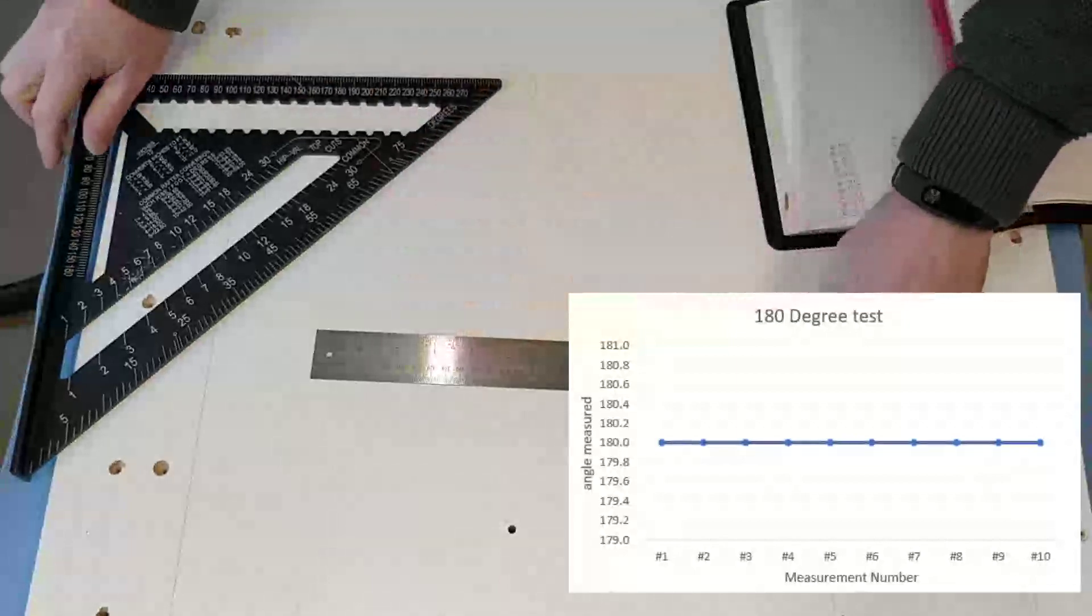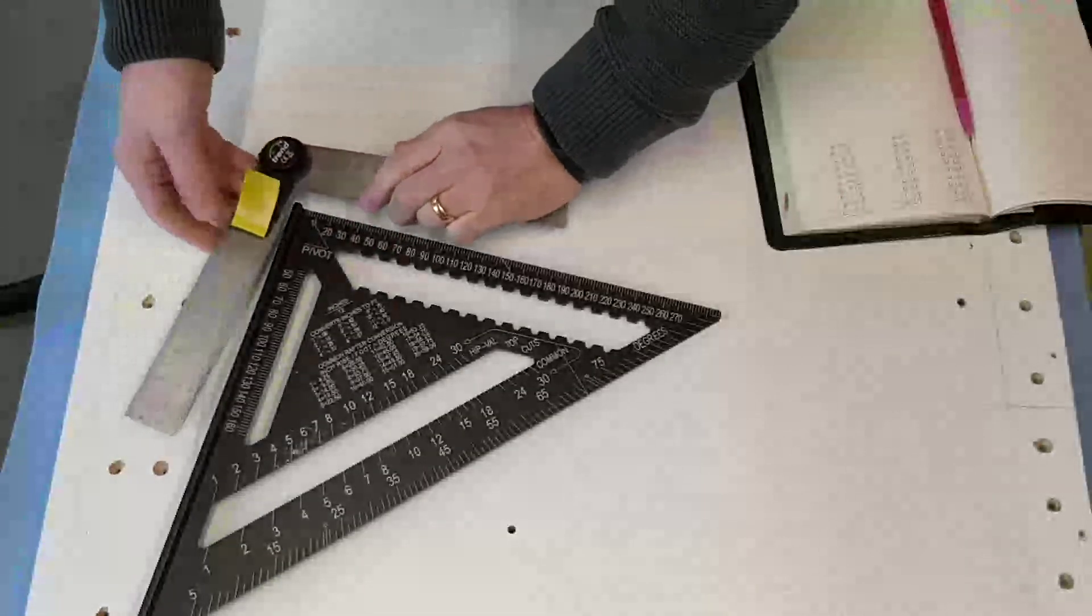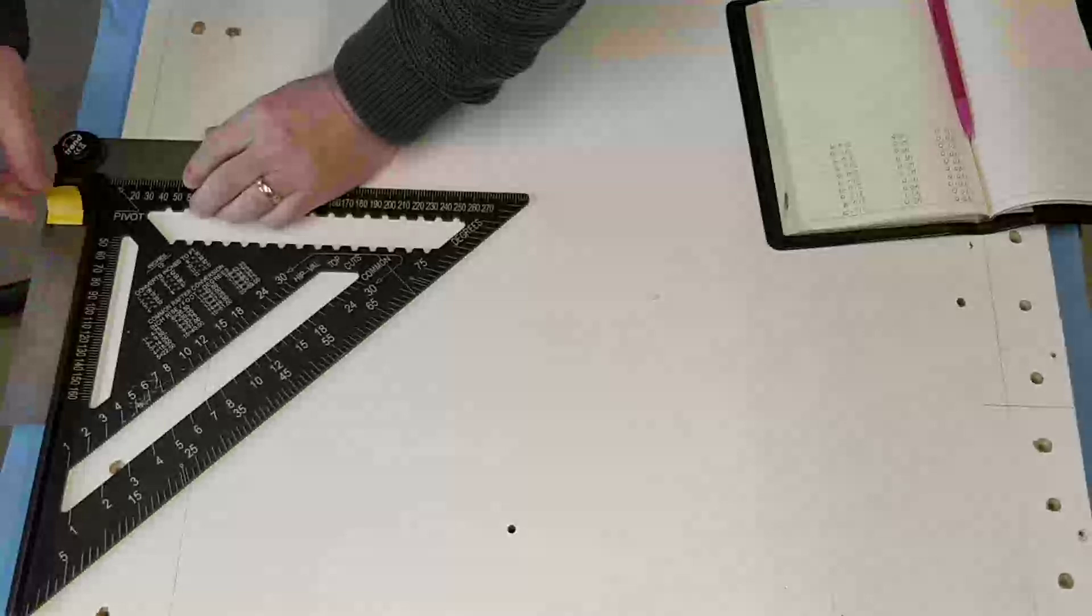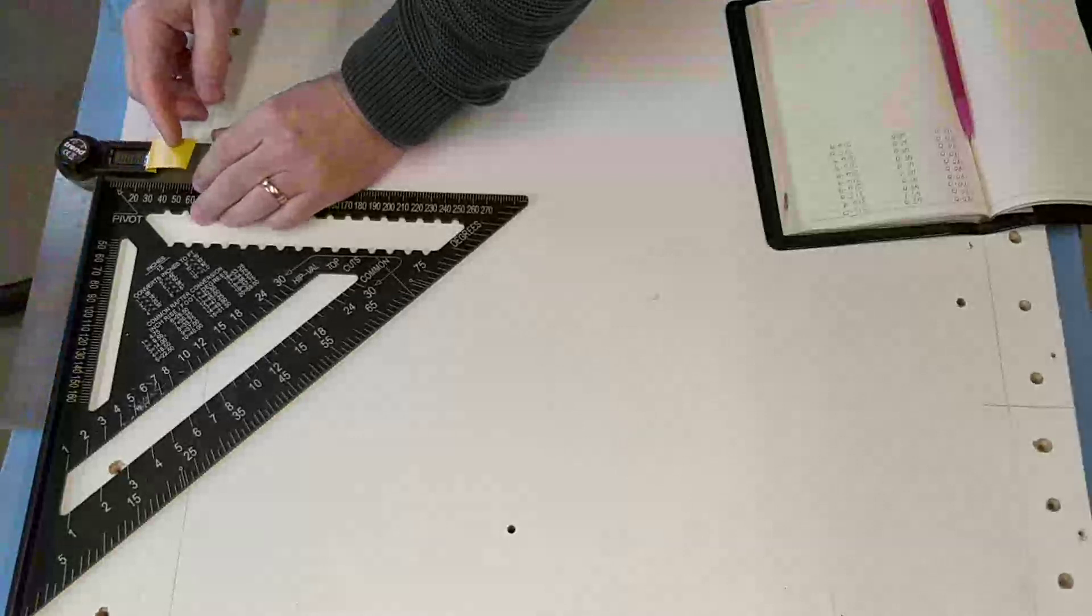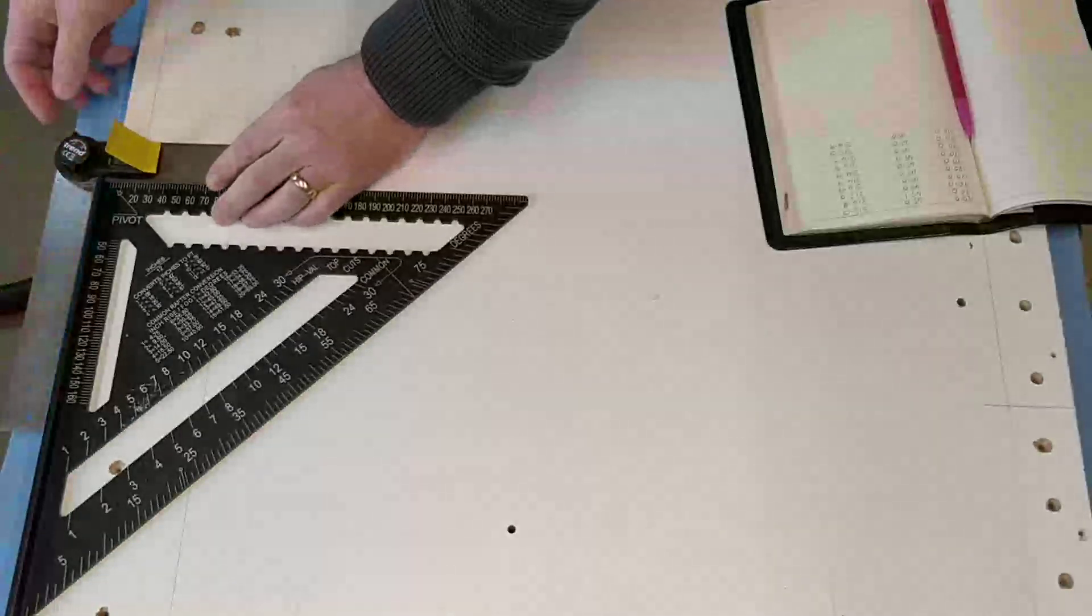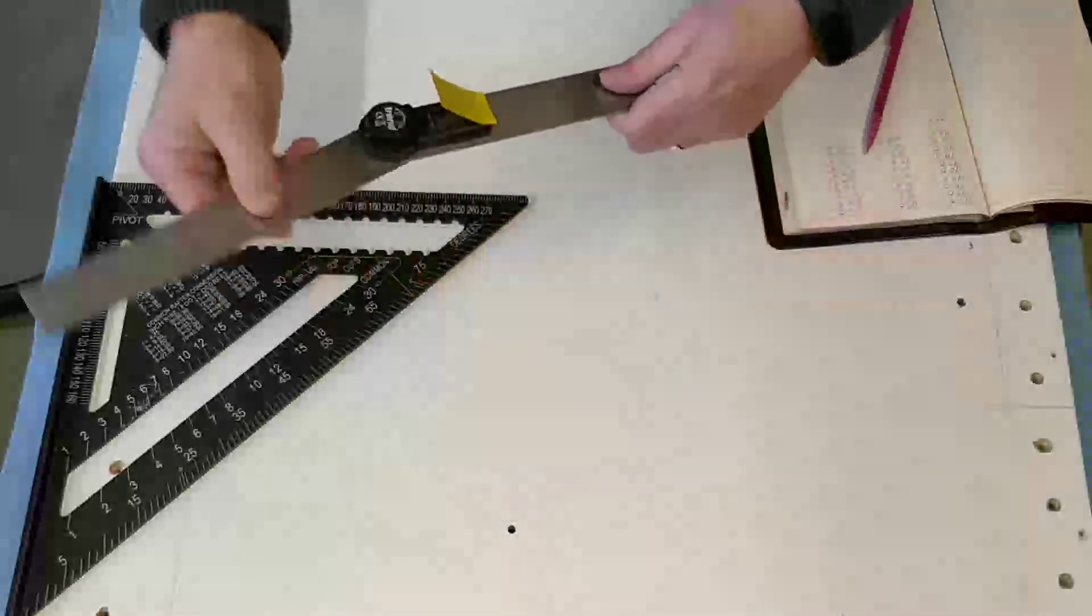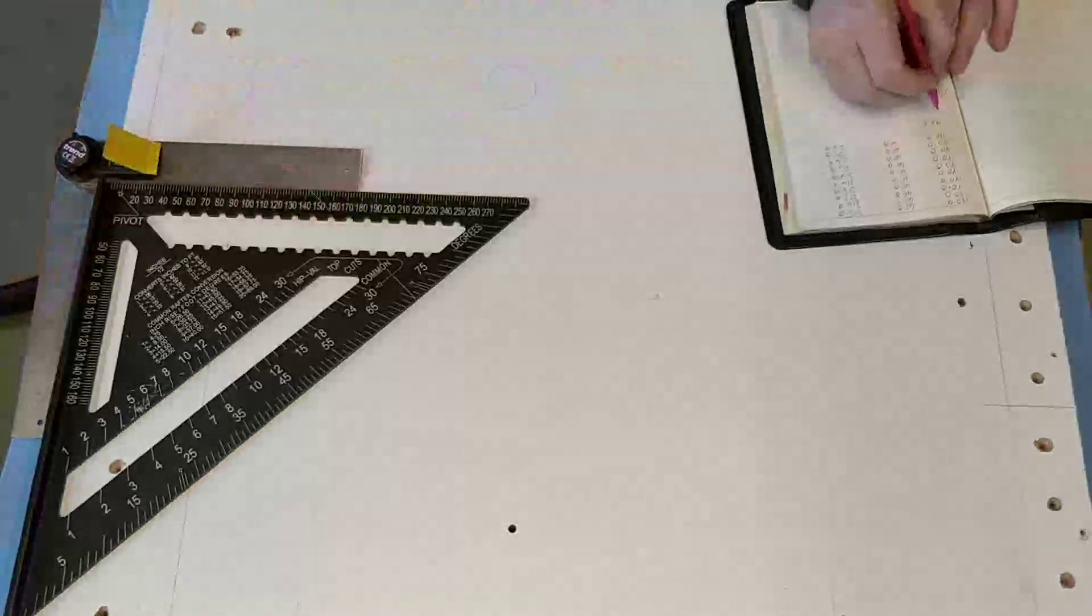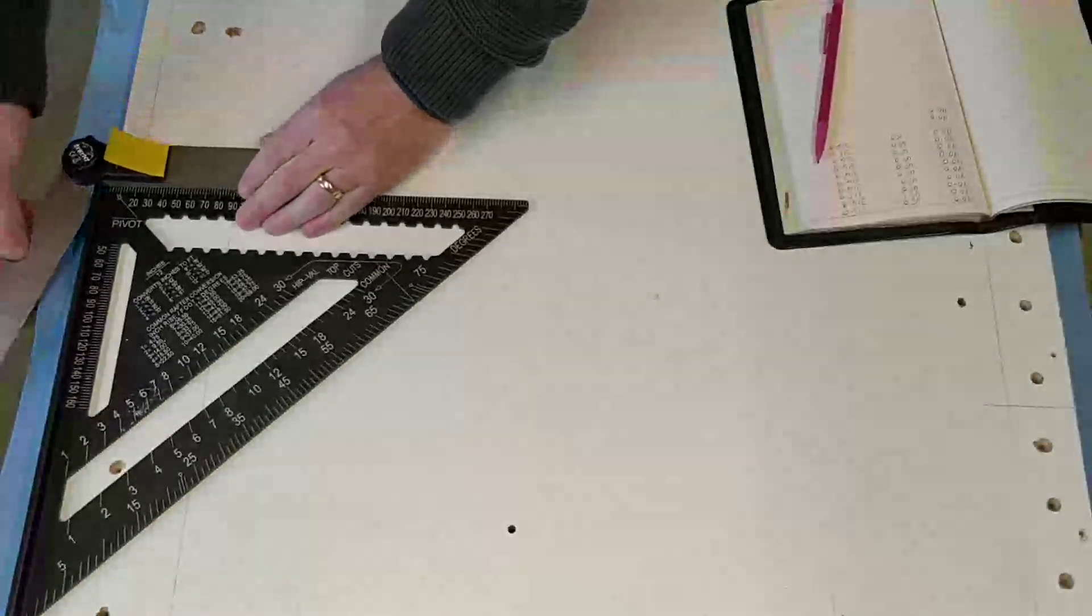I'm now going to do the 90 degree test. 90. Is that 90 or is it? Yeah, 90. Looking upside down. That's 90 degrees. So I'll open it up, do that again. 90. I'll carry on doing this off camera and come back with the results.